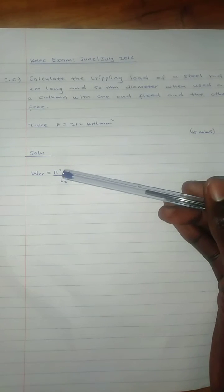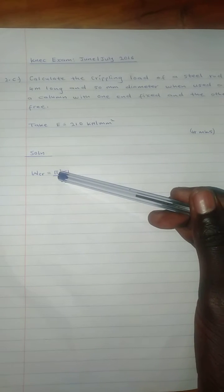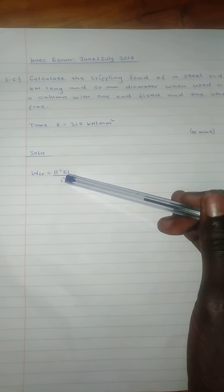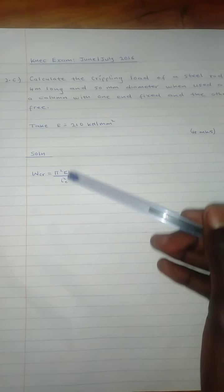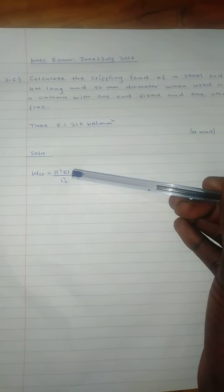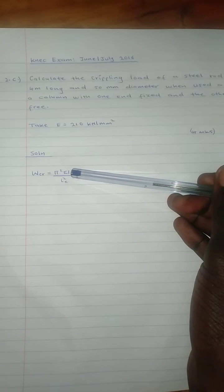First, I'll write the formula for you. This is the formula for calculating the crippling load: pi squared E I over effective length squared. We have the Young's modulus, we will have to get the inertia and the effective length so we can proceed. First, let's find the inertia.